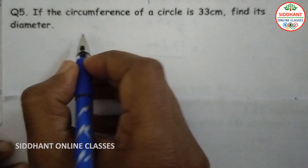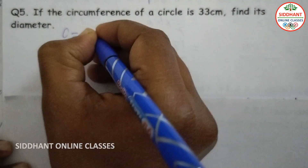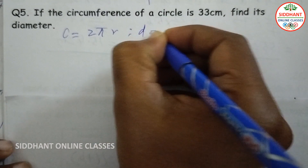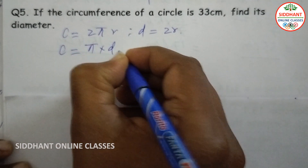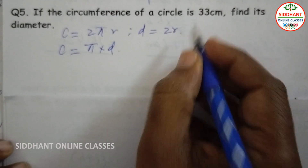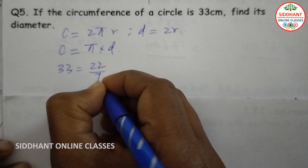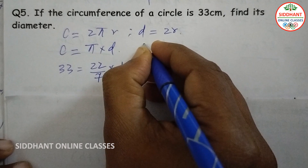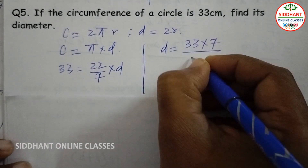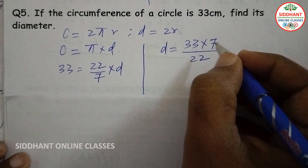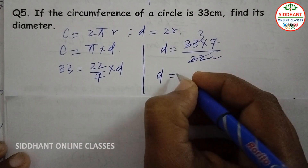Question number five: if the circumference of a circle is 33 centimeters, find its diameter. We know circumference equals 2 pi r and diameter equals 2r, so circumference equals pi into diameter. The circumference is given as 33 and pi we are taking as 22/7 into d.